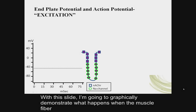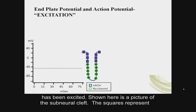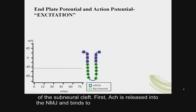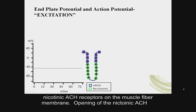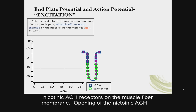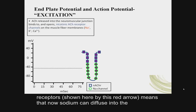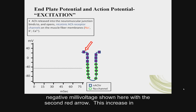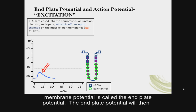This slide graphically demonstrates what happens when the muscle fiber has been excited. The squares represent nicotinic acetylcholine receptors, and the circles represent voltage-operated sodium channels at the bottom of the subneural cleft. First, acetylcholine is released into the neuromuscular junction and binds to nicotinic acetylcholine receptors on the muscle cell membrane. Opening of these receptors means that sodium can diffuse into the muscle cytoplasm, raising the membrane potential to a more positive millivoltage. This increase in membrane potential is called the endplate potential.